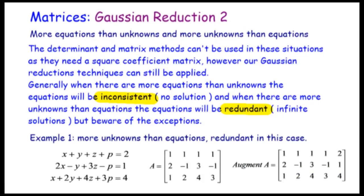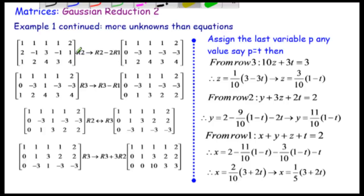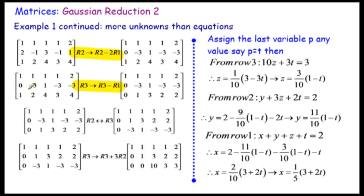Let's have a look at the Gaussian reduction. Having a 1 somewhere is very handy. Row 2 becomes equal to row 2 minus 2 lots of row 1, so we subtract 2 lots of the first row from row 2 to get a zero here. And again we do this with row 3 as well — row 3 minus row 1 — and you get a zero here. We are well on the way, and our aim is to get zeros below the diagonal.